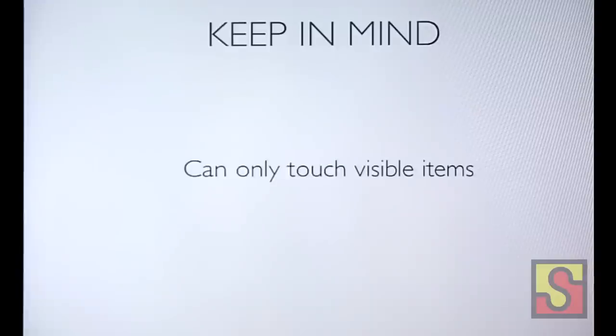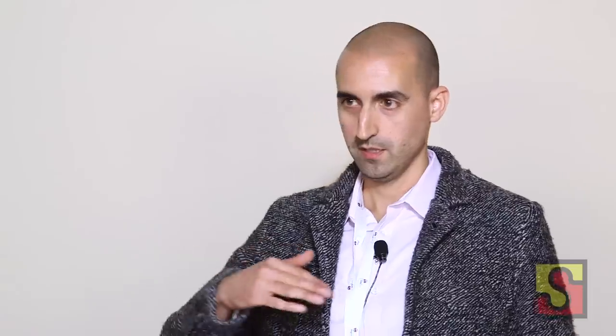Another thing to keep in mind is that you can only touch visible items. If you're trying to touch an item further down on the screen, you have to write a script that keeps scrolling until it sees that element, then you'll be able to touch it. There are exceptions — for example, there's a command that tells you the total number of cells or rows in a table view, and you can scroll to a cell even if it's not visible, like scroll to cell 20. But to actually touch it, it has to be visible on screen.